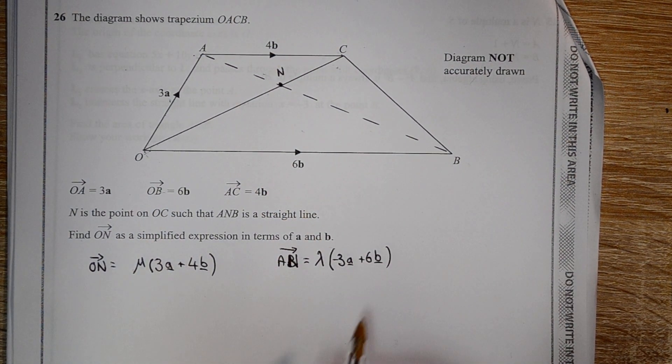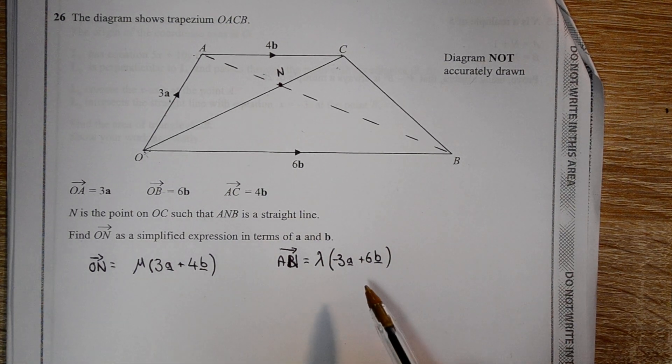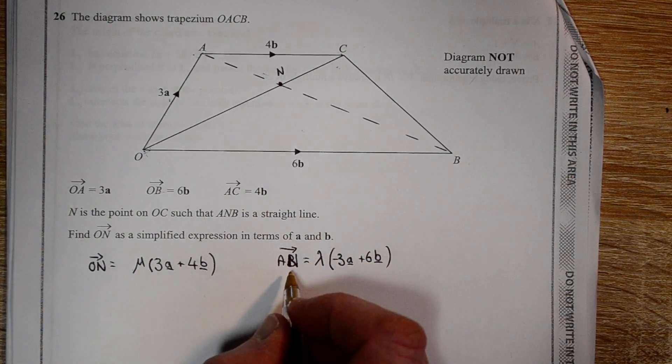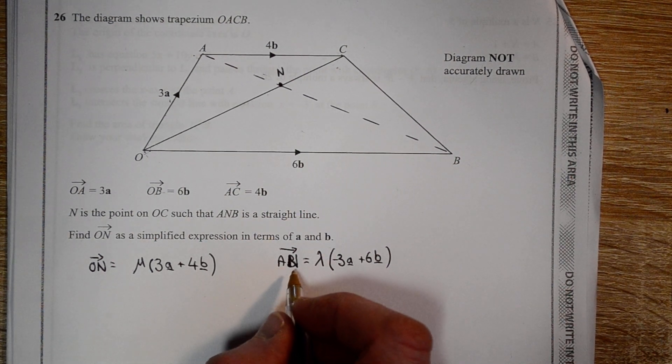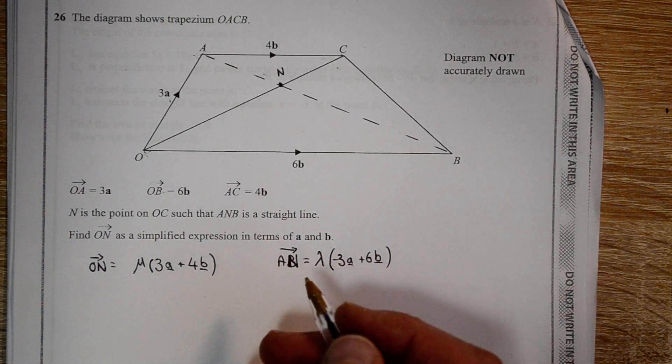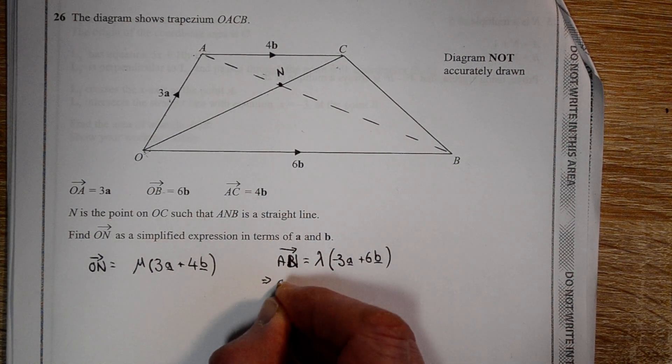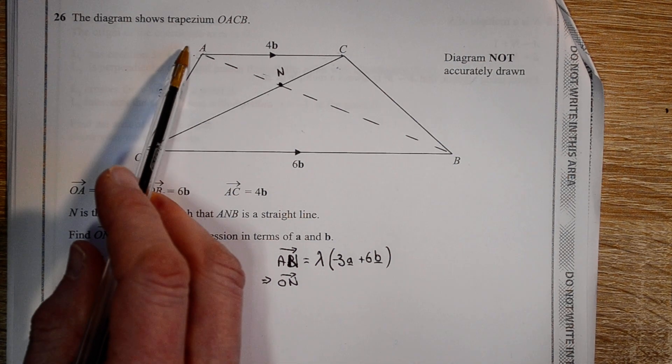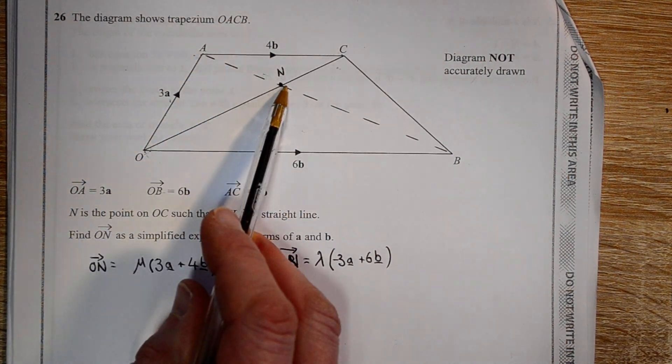Now what we want to do is to be able to equate these. At the moment, here we've got ON, and here it's meant to be AN, but we can turn this into ON by starting at O, going up to A, and then going along the distance AN.